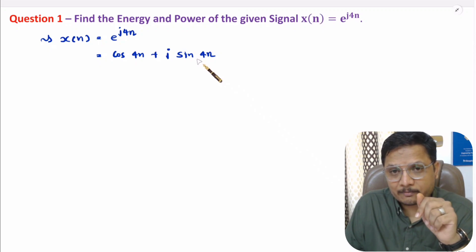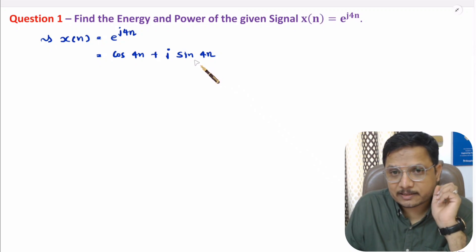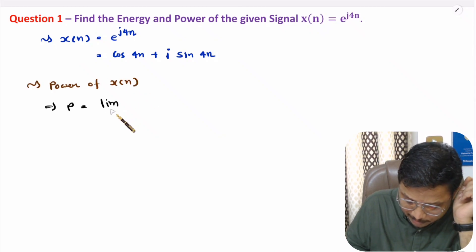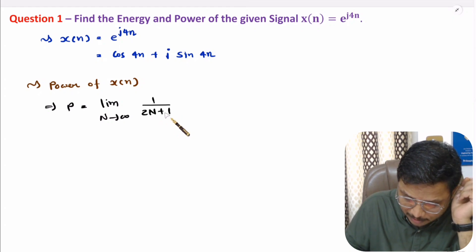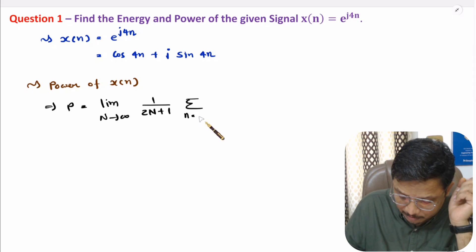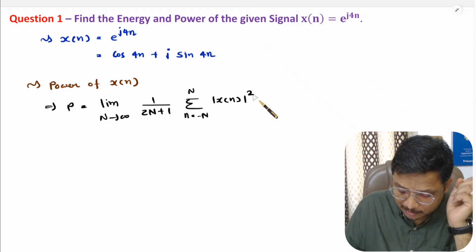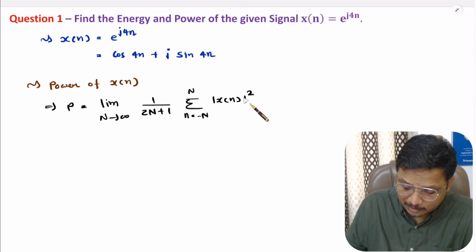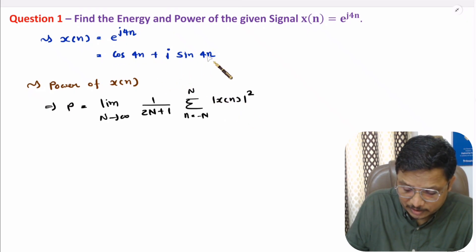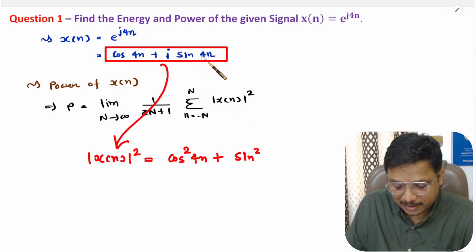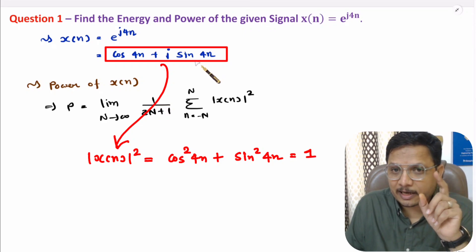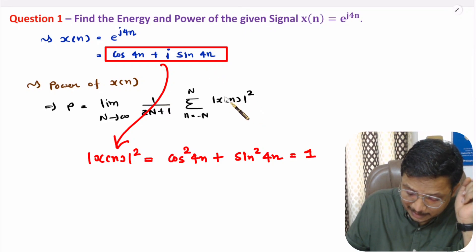As this is a periodic signal, we need to identify the power of that signal. Power will be: limit as capital N tends to infinite of 1 divided by 2N plus 1, where small n ranges from minus N to plus N, of the square of the signal. The square of the signal, based on the sine and cosine representation, is the real component squared plus the imaginary component squared — that is cos²(4n) + sin²(4n), which equals 1. So the square of the signal is unity.